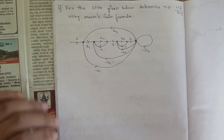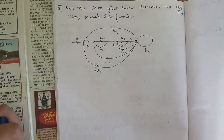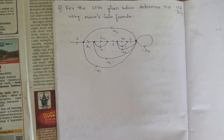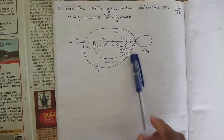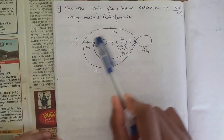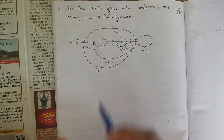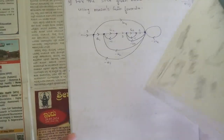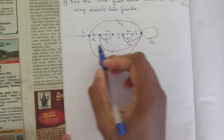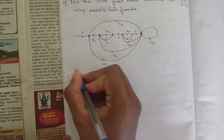Hello everyone, welcome to this new session. This is the last session of this module. In this session we are going to solve two problems related to signal flow graph. The problem is: given a signal flow graph, determine the transfer function using Mason's gain formula. Observe carefully - there are six nodes, and between those nodes we have certain loops and transmissions. First, let's write all the paths.